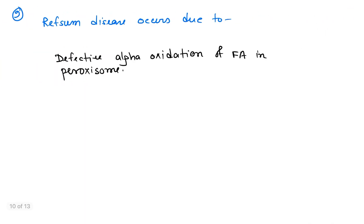Coming to question number nine: Refsum disease occurs due to which pathology or etiology? It is because of defective alpha oxidation of fatty acid in peroxisomes. So this will be the answer: alpha oxidation defect in peroxisomes. Other options are like defect in beta oxidation or omega oxidation in some other organelles.